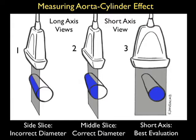This next illustration makes the point that choosing the correct probe orientation is very important for getting an accurate measurement of the aorta, due to the cylinder effect. Looking at the two long axis views of the probes along the aorta shown towards the left, beginning in probe position one, we see a side slice where the probe is positioned towards the side of the aorta, underestimating the true diameter of the aortic lumen. Positioning the probe towards the middle, as shown in probe position two, will get a correct diameter, but this can be difficult to ascertain using the long axis orientation.